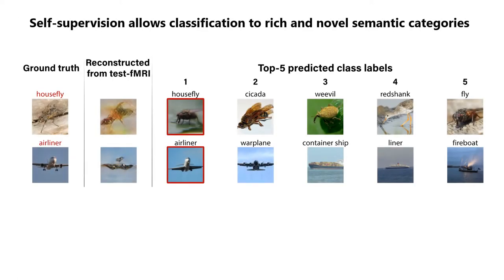The benefit of our self-supervised approach extends beyond image reconstruction. It further allows large-scale semantic classification to novel categories from fMRI data — namely detecting the correct class label out of more than a thousand rich classes.